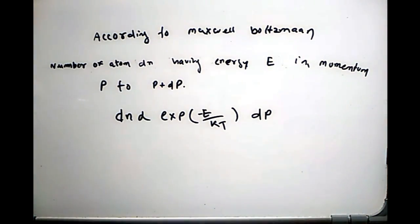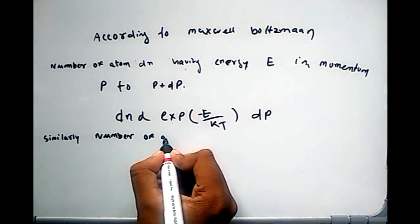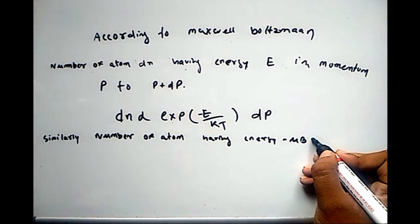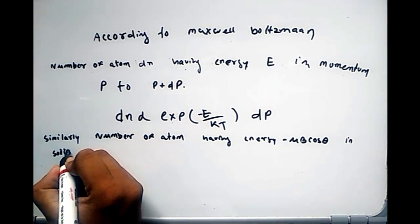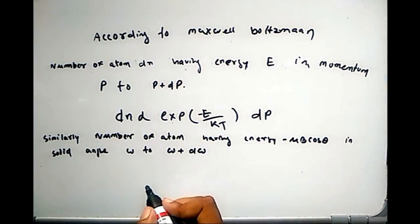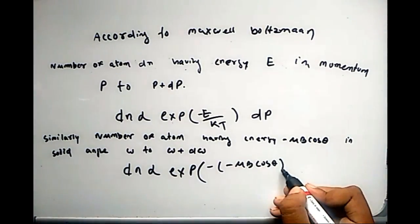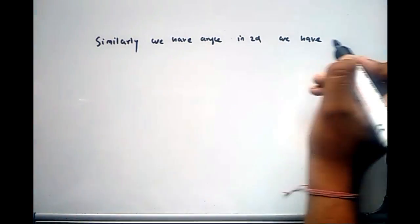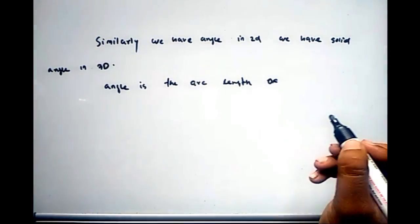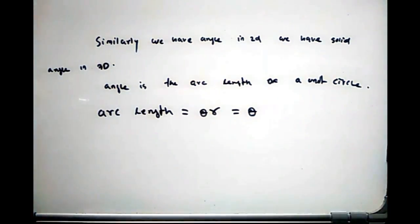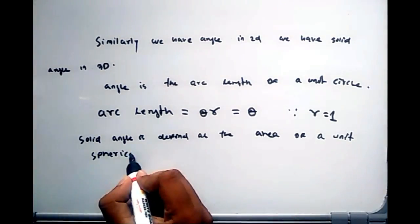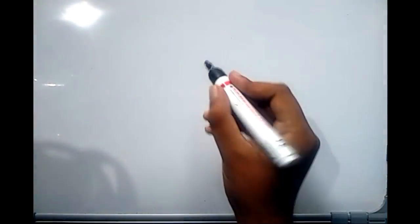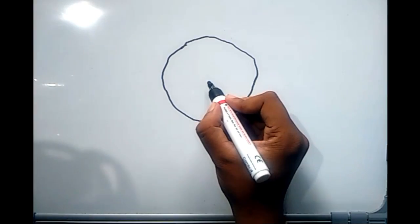Inside a block of paramagnetic substance there are many atoms distributed in 3D. The number of atoms in solid angle dΩ to dΩ + dΩ is given by dN ∝ k·e^(μB cosθ / kT) dΩ, where k is the proportionality constant. Solid angle in 3D is analogous to angle in 2D — just as angle is defined as arc length of a unit radius circle, solid angle is defined as the area of a unit radius sphere.